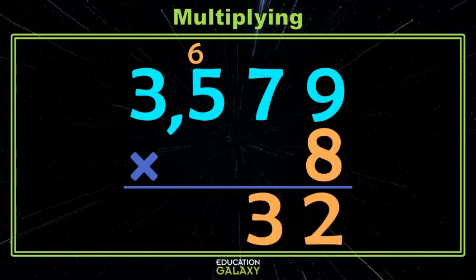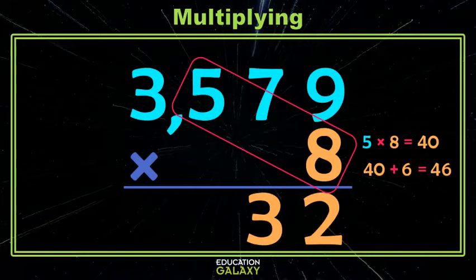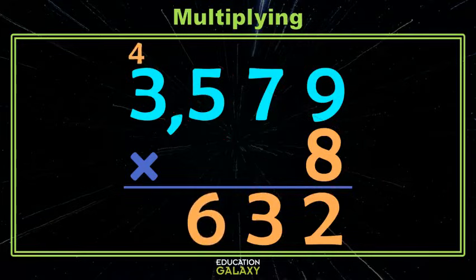Now, what do we multiply? If you said 5 and 8, you're correct. 5 times 8 is 40. Don't forget the 6 you carried. 40 plus 6 is 46. 46 doesn't fit in the hundreds place, so we put the 6 in the hundreds and carry the 4.